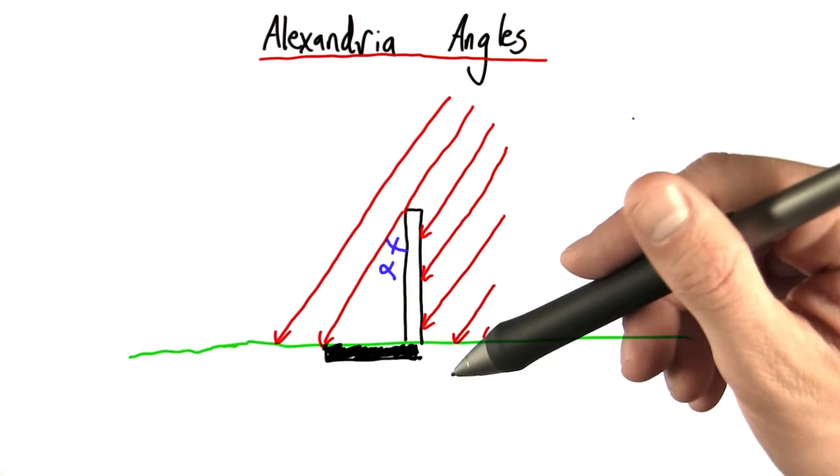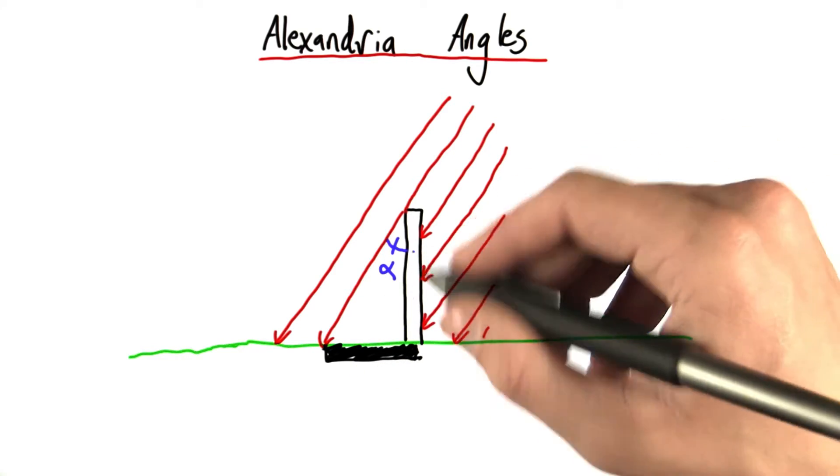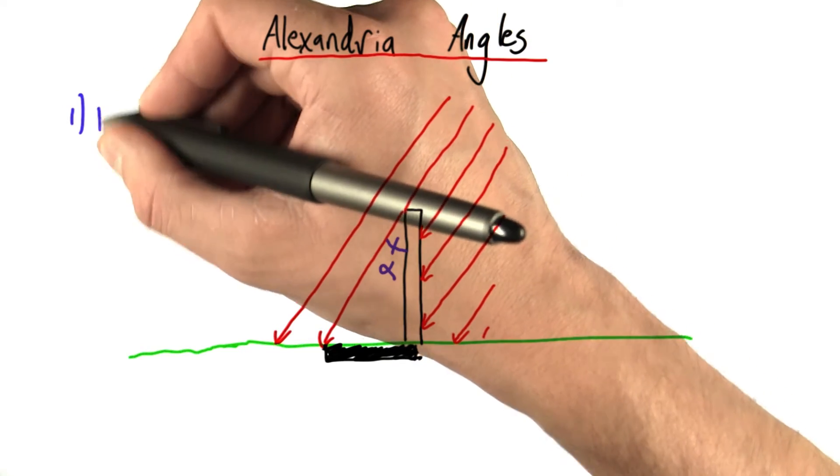So, the only real place for error in this calculation, well, there's three places for error in this calculation. The first is making sure the rod is vertical.